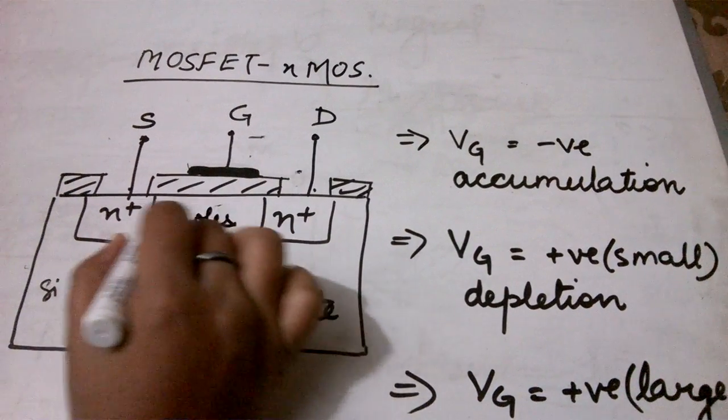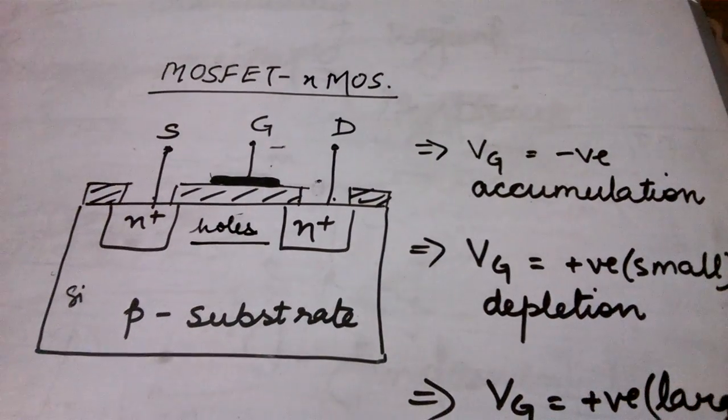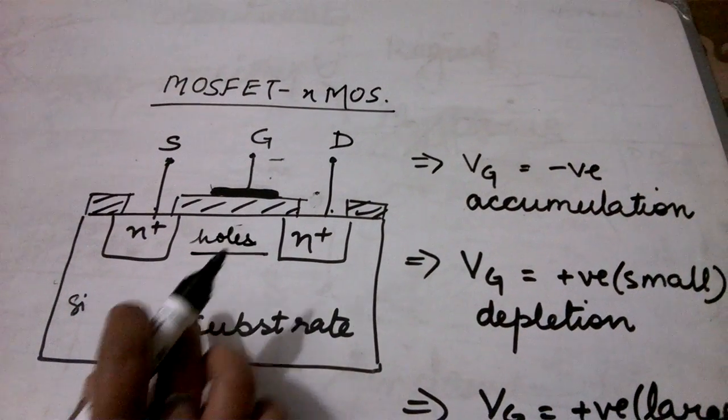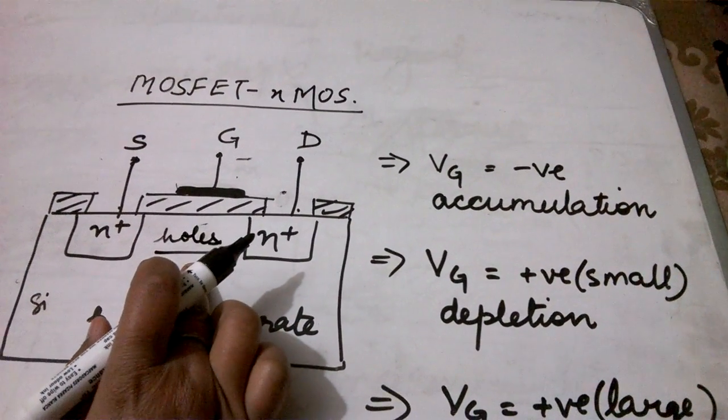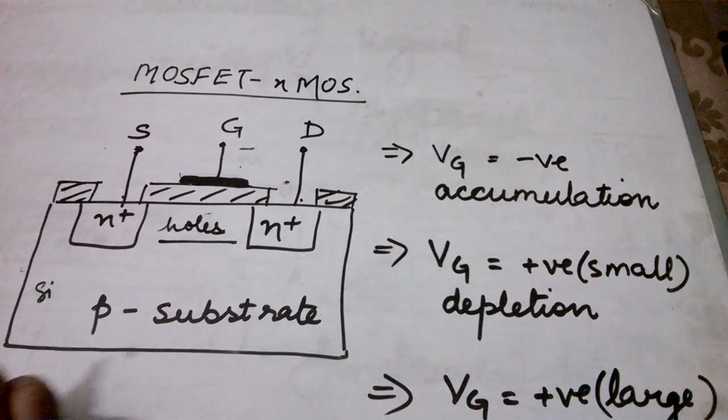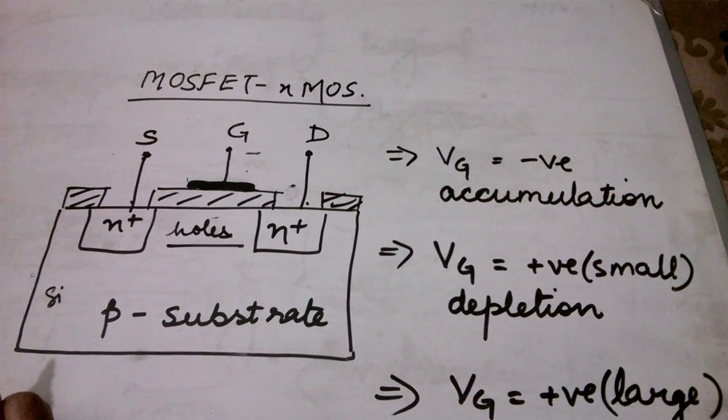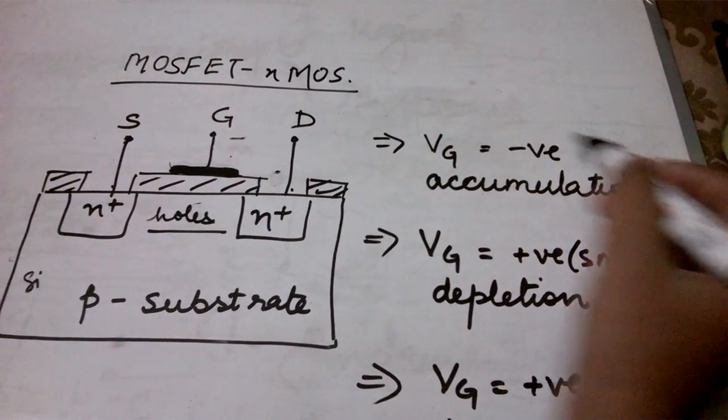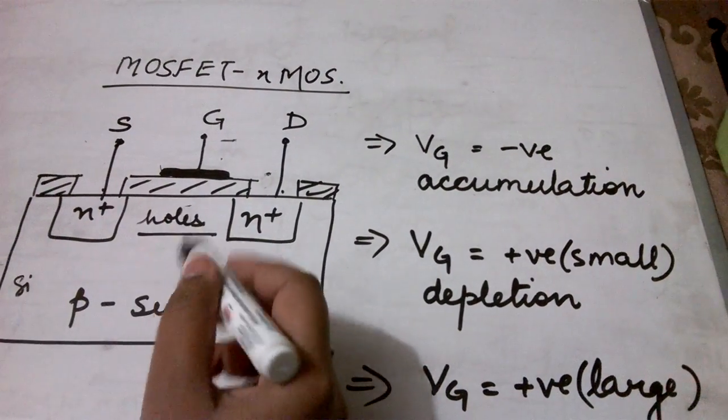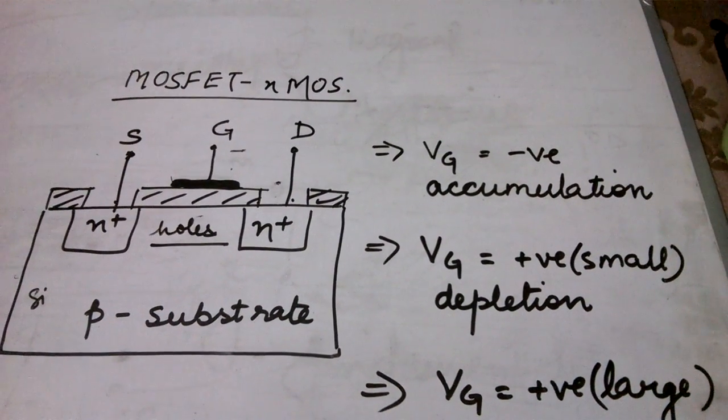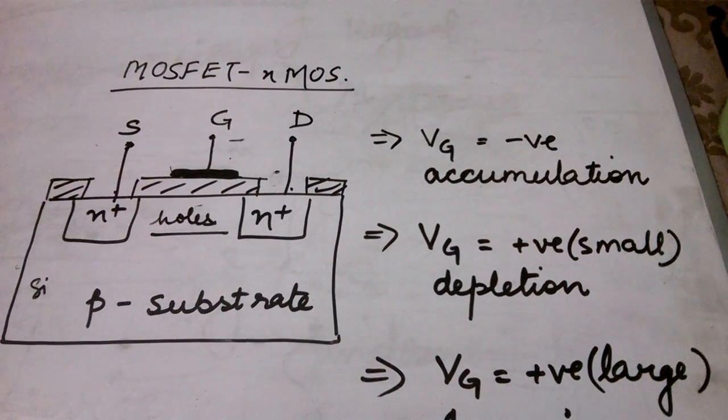So this particular part is rich in holes when the gate terminal is applied with a negative voltage. Now the holes are incapable of providing a conduction link between these two N-plus source and drain terminals. So the device is said to be in accumulation because holes are accumulating as the negative gate voltage is increased. There is no conduction in this mode.